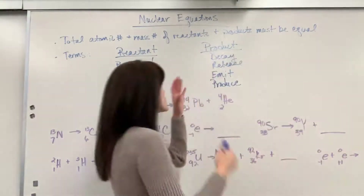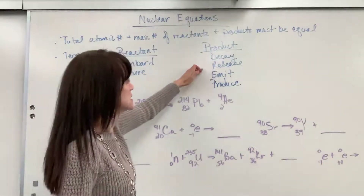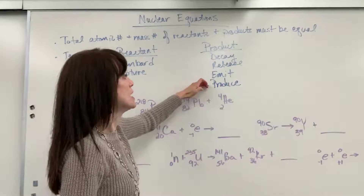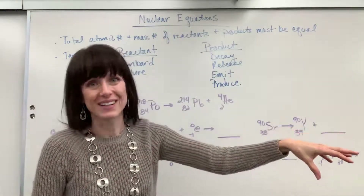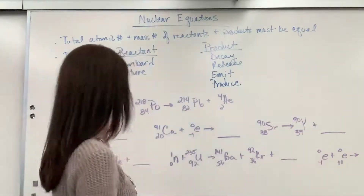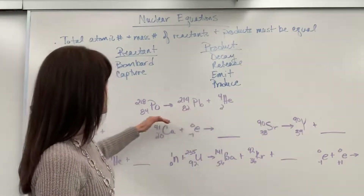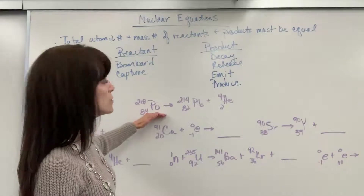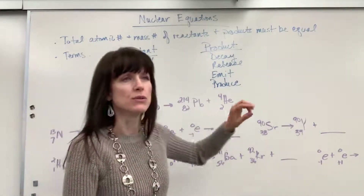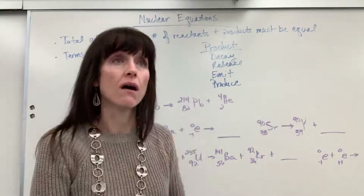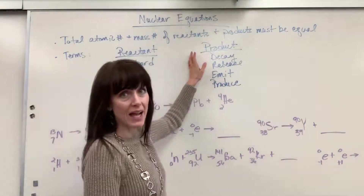Now look for these buzzwords: if you see the words 'decay,' 'release,' 'emit,' or 'produce,' that means that particle goes on the product side. Here's an example: polonium-218 undergoes alpha decay. So when you see 'alpha' and 'decay,' that means the alpha particle is on the product side.